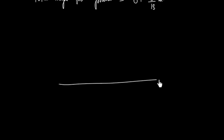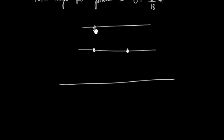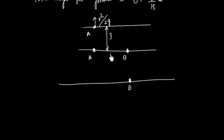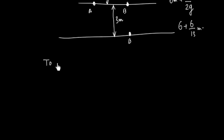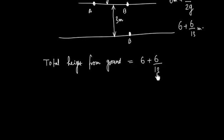To summarize: the ground is here, both objects started at 3 meters. This is 3 meters, and the 5 kg mass traveled another 3 meters upward — so that's 6 meters total. Then after the string went slack with velocity v, it covered an additional v²/2g = 9/13 meters. So the total height from ground is 6 + 9/13 meters.